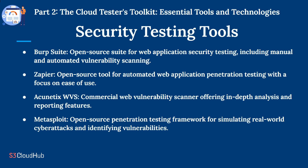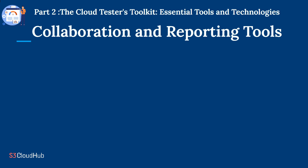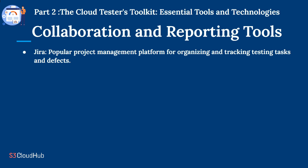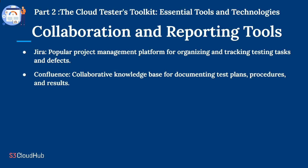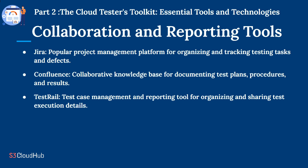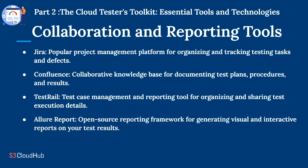Collaboration and reporting tools: Jira is a popular project management platform for organizing and tracking testing tasks and defects. Confluence is a collaborative knowledge base for documenting test plans, procedures, and results. TestRail is a test case management and reporting tool for organizing and sharing test execution details. Allure Report is an open-source reporting framework for generating visual and interactive reports on your test results.